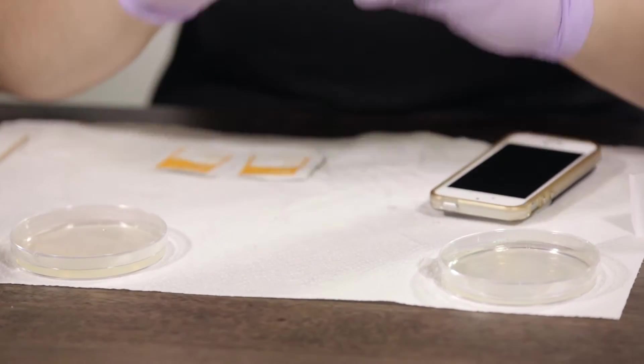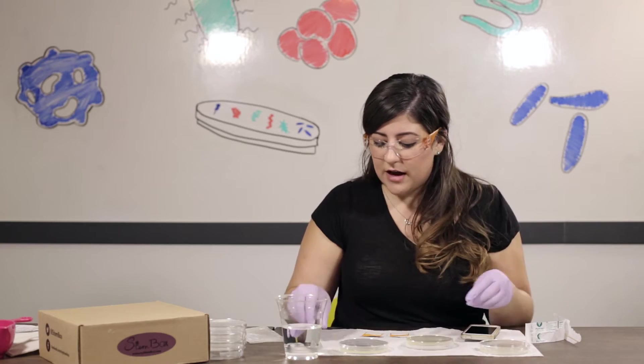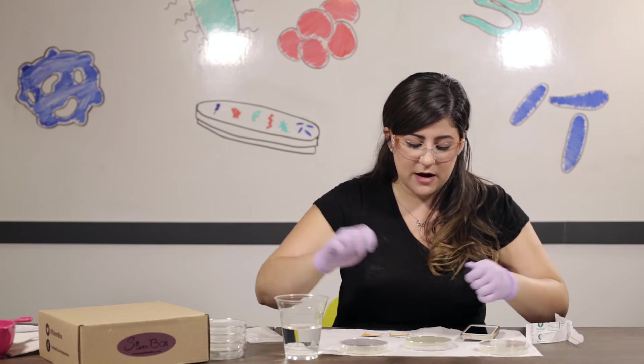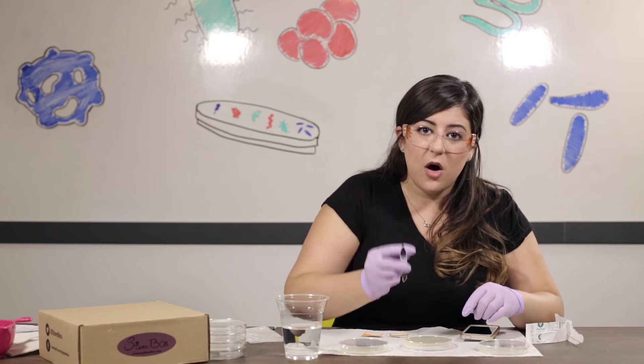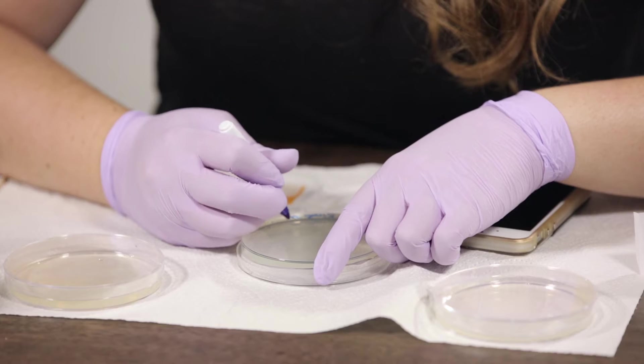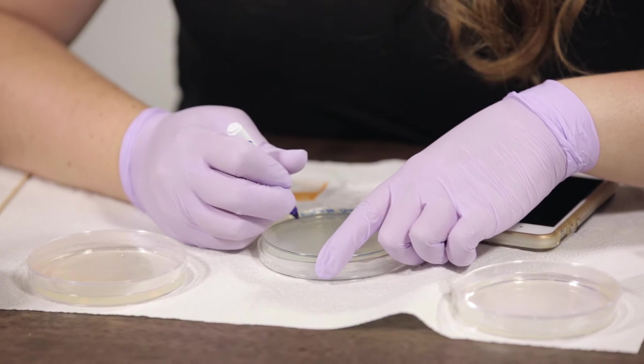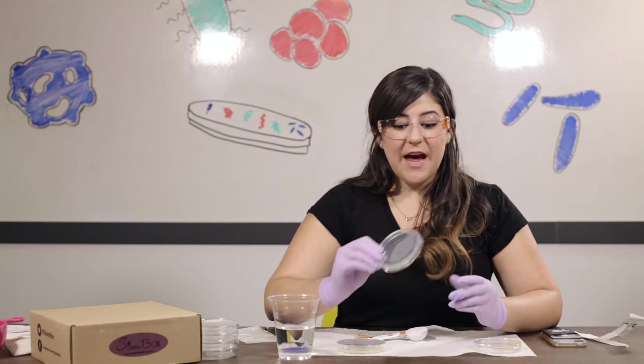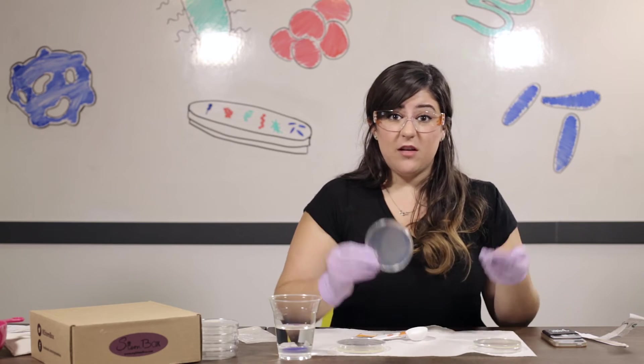Cover your plate, turn it upside down so that water condensation doesn't form and mess up your culture on the top of the agar. And we always, always, always mark our plates. So I'm gonna mark this Kina's nasty cell phone and date it. So that's the first method of culturing from a solid surface.